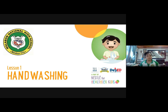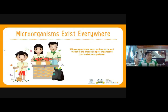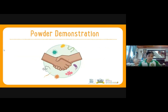Microorganisms such as bacteria and viruses are microscopic organisms that exist everywhere. They cannot be seen with the naked eye but can easily transfer from objects and surfaces to people, or from one person to another. Imagine that this baby powder is the microorganism — this powder in my hand represents microorganisms. Remember, we can't see a real microorganism with our eyes, but pretend that this is a microorganism in my hand.